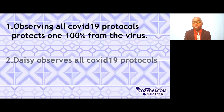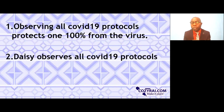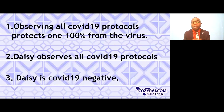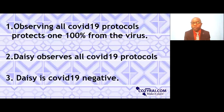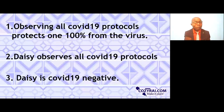Then the minor premise: Daisy observes all COVID-19 protocols. And from the minor premise, the conclusion is: Daisy is COVID-19 negative. Now, if the truth in the major premise is absolute and the truth in the minor premise is absolute, there is no way the conclusion will be faulty. This is one example of syllogism, the argument in deductive reasoning.